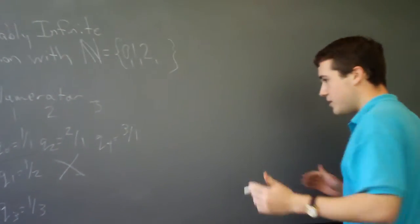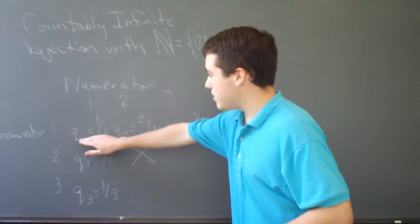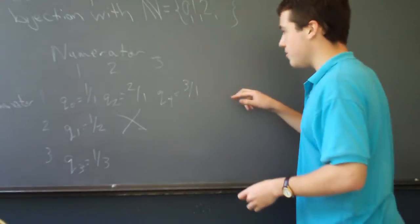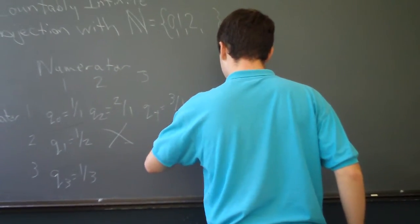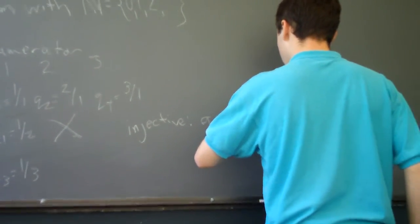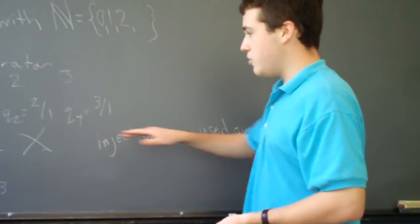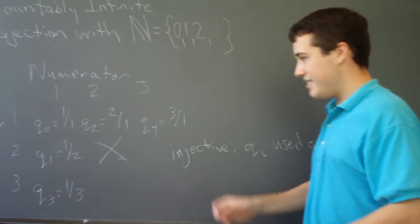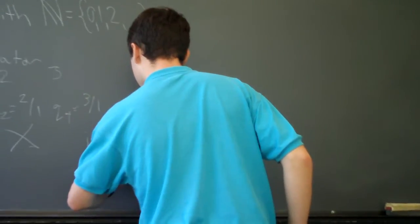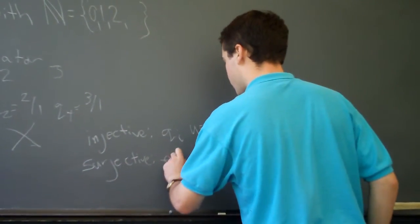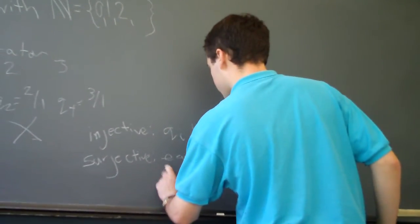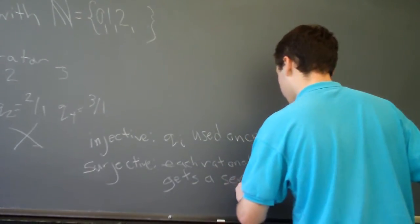Now, this set has created a bijection from the natural numbers given here as the subscripts of the Qs to the rational numbers represented in their fractional forms. And it is injective, because each Q sub i is only used once. And if you have two Q sub i and Q sub j, such that i does not equal j, then the two numbers that are mapped to are not going to be equivalent. And it is surjective, because each rational number gets a serial number, so to speak.